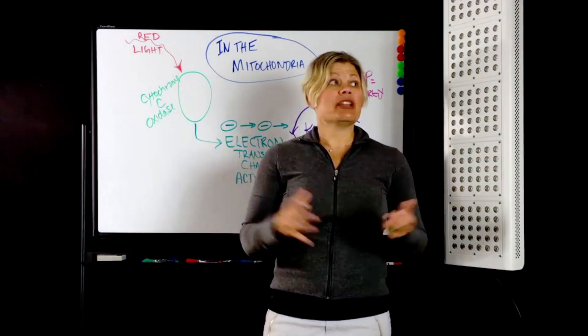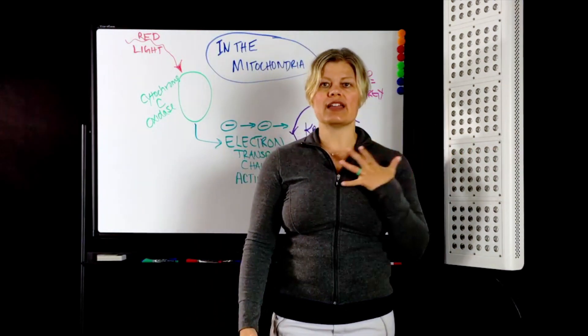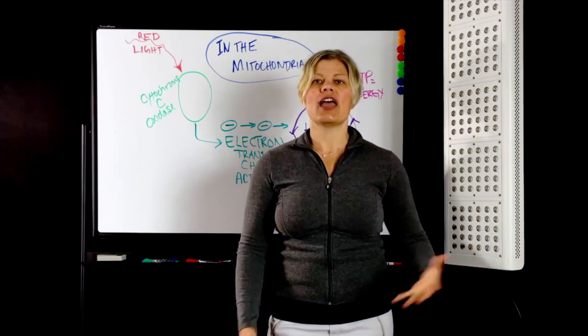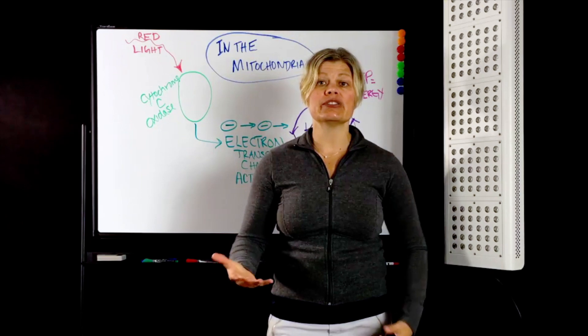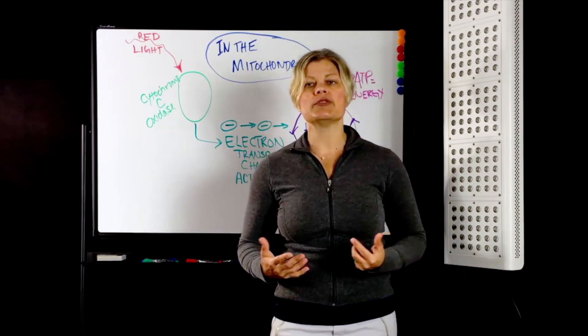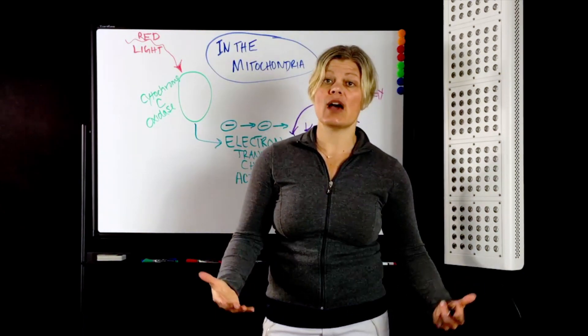So what's happening when you turn on a red light therapy device? It's going to shine red light straight in through your skin, into your cells, and into your mitochondria. And what those mitochondria are going to do is they're going to speed up their process of making energy, but also help you to make more antioxidants and help with increasing circulation.